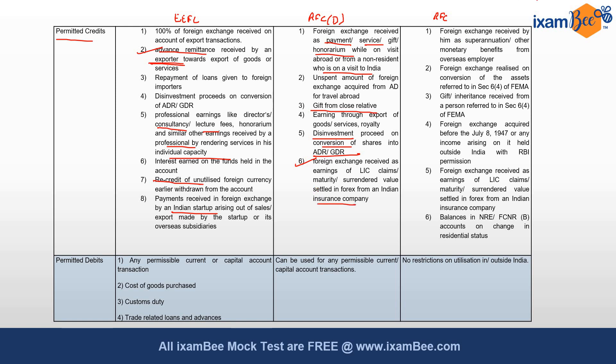The sixth permitted credit to RFC(D) is foreign exchange received as earnings of LIC claims, maturities, or surrendered value settled in forex from an Indian insurance company. For the RFC (Resident Foreign Currency) account, the first permitted credit is foreign exchange received as superannuation or other monetary benefits from an overseas employer. The second is foreign exchange realized on conversion of assets referred to in Section 6(4) of FEMA. The third is gift or inheritance received from a person referred to in Section 6(4) of FEMA. The fourth is foreign exchange acquired before 8th July 1947, or any income arising on it, held outside India with RBI permission. The fifth is foreign exchange received as earnings of LIC claims, maturity, or surrendered value settled in forex from an Indian insurance company.